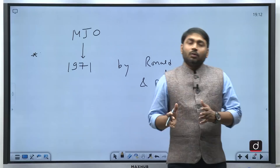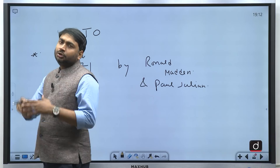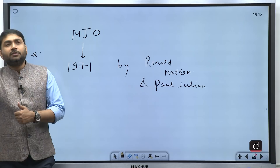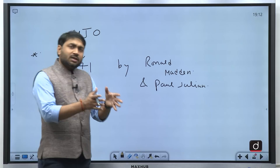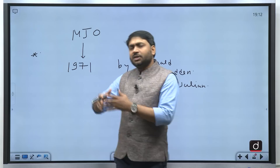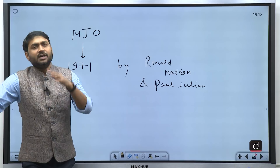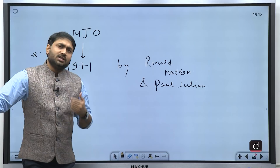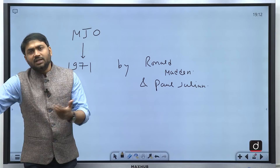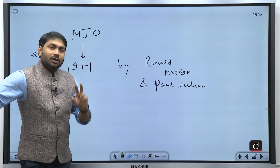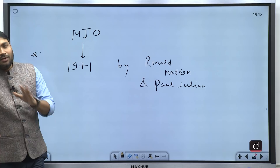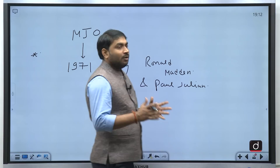Similar to the IOD as well as the ENSO events, we are not sure what exactly causes the anomalous behavior — sometimes the sea surface is warmer in the Arabian Sea, sometimes in the Bay of Bengal. Similarly in El Niño-La Niña, we don't know what triggers these anomalous events. So here also, nobody knows what exactly triggers this MJO cycle; it is still a topic of research.